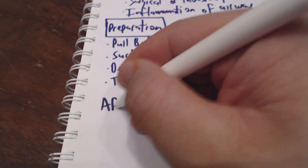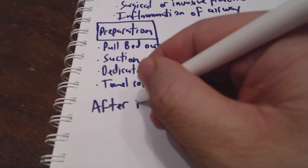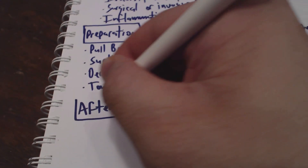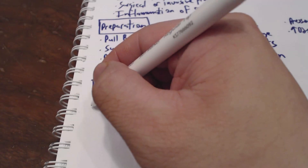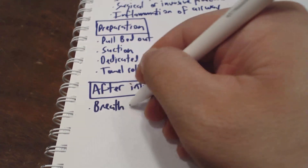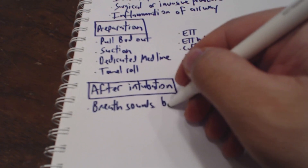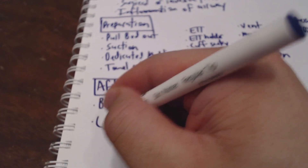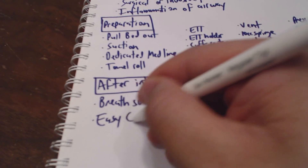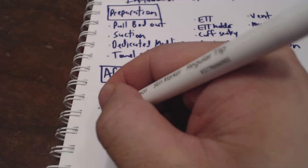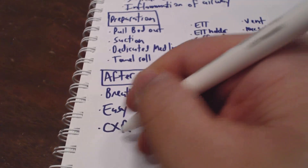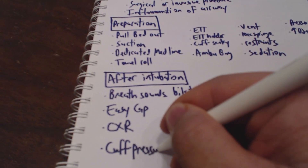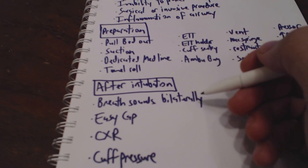Directly after intubation, there are a few very important things we need to do to finish up the whole process. The first thing, once we are past the glottis and in a good position, is we're going to want to hear breath sounds bilaterally. After that, we'll also want to attach the easy cap, get a chest x-ray, and check the cuff pressure. These aren't directly in order, but these are the four things we're going to have to do.